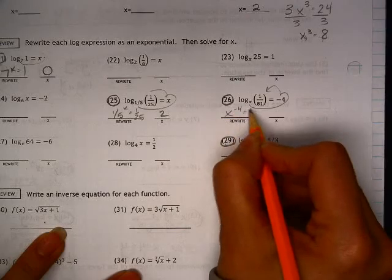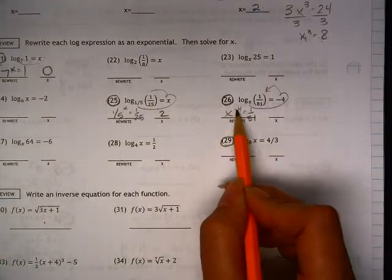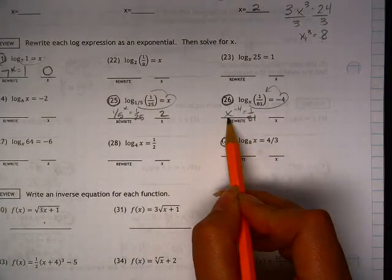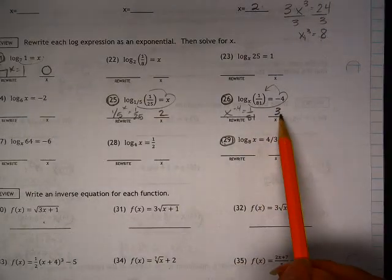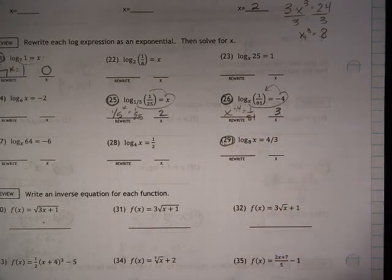x to the negative 4 is equal to 1 over 81. The negative is going to flip it, so that's fantastic. And 3 to the 4th power is 81, so 81 would give me that, and the negative flips it.